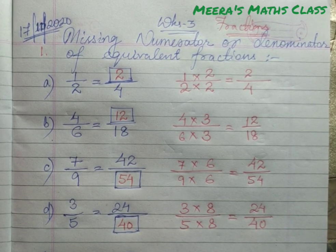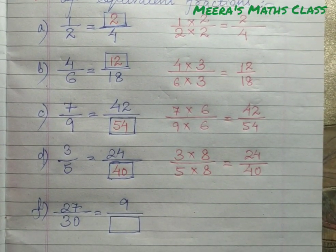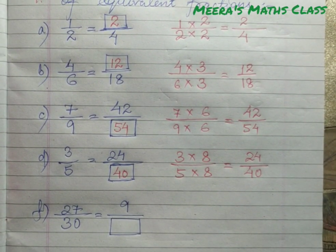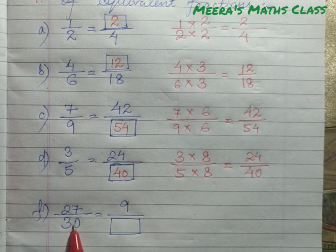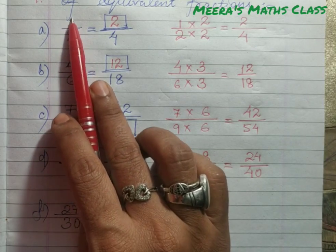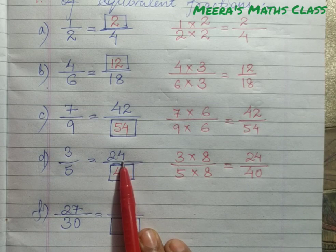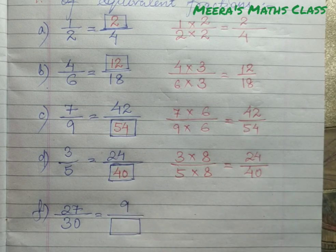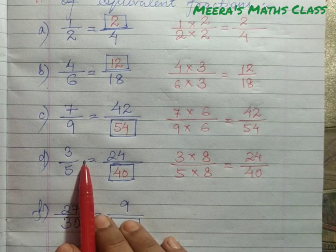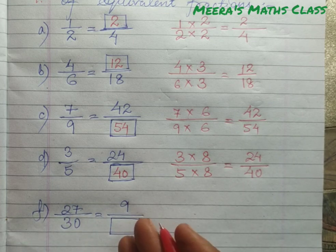Now I hope you understood how to find out the numerator and denominator. I will show you one more example — a different kind. In the previous examples, the base fractions given were smaller than the equivalent fraction we were finding, so we were multiplying to get it. But here, the given base fraction is more than the finding-out fraction. What can we do? We can do this in two types.